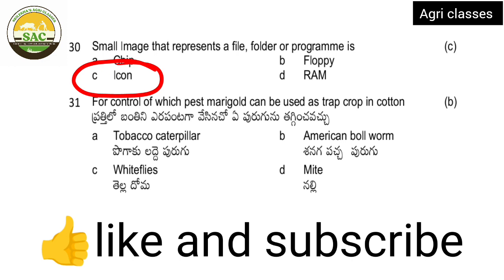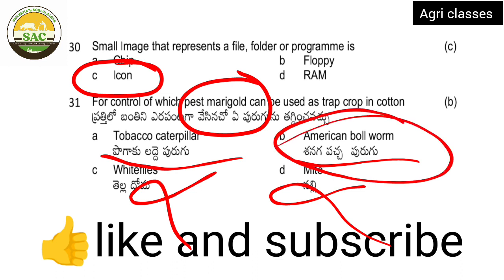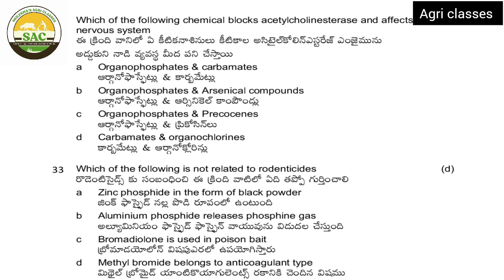Next: for control of which pest can marigold be used as a trap crop? This is a very easy question. Marigold is used as a trap crop in cotton. It is used for tobacco caterpillar. Castor also uses it. It is a simple question. Next: which of the following chemical blocks acetylcholinesterase and affects our nervous system?